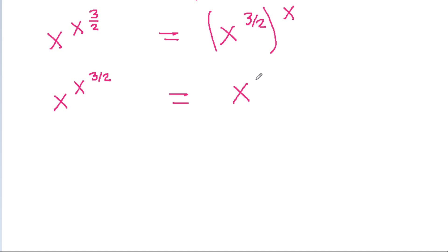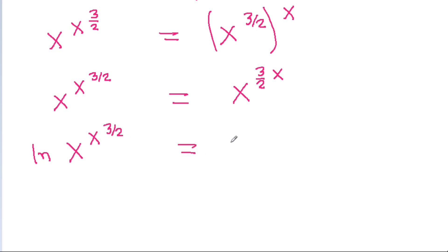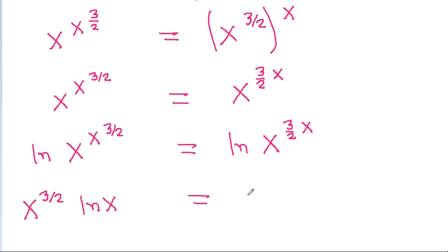And x power 3 by 2 times x. If we take ln of both sides, then we get ln of x power x power 3 by 2 is equal to ln of x power 3 by 2 times x, and it is x power 3 by 2 times ln x is equal to 3 by 2 x times ln x.